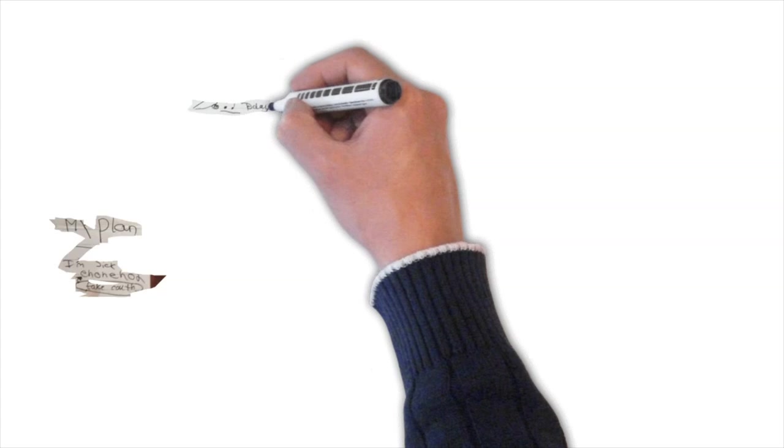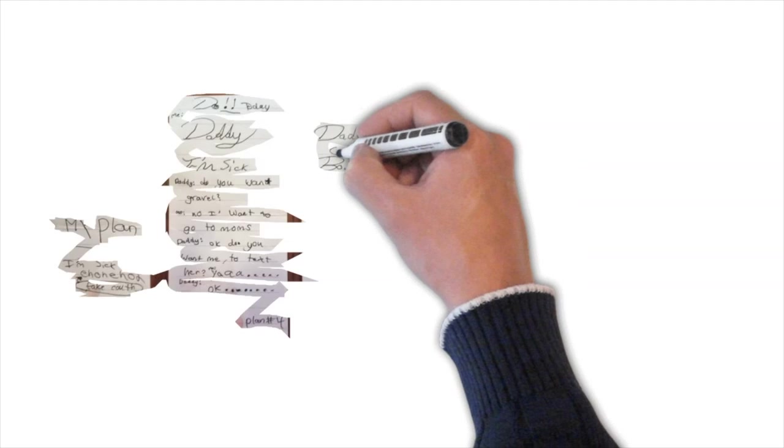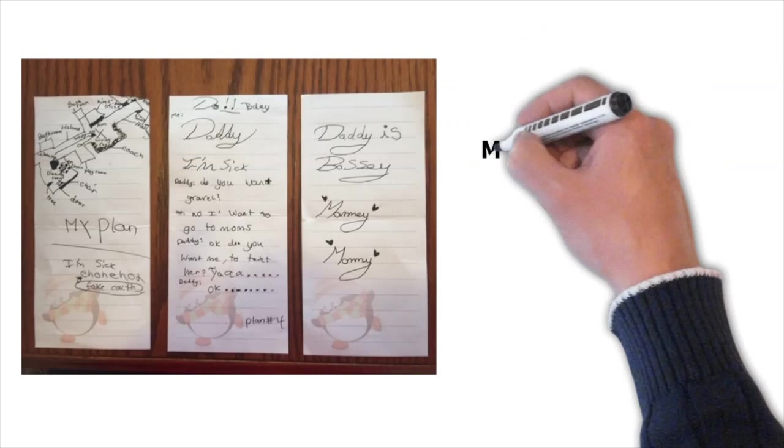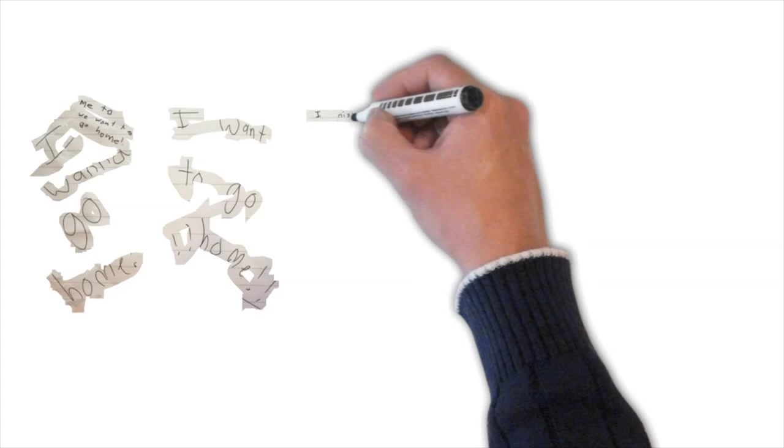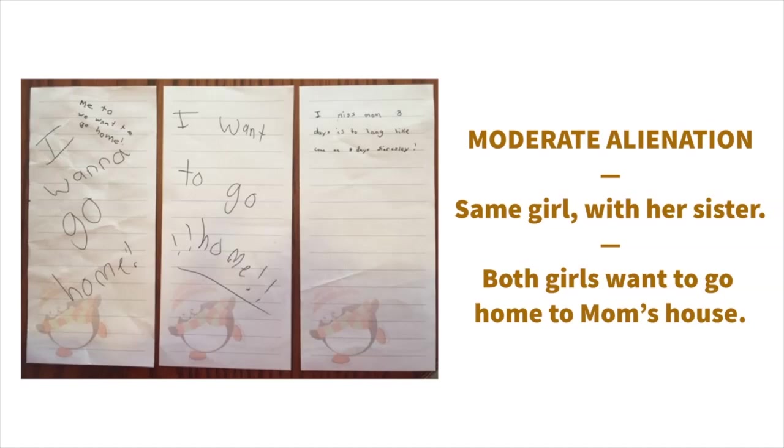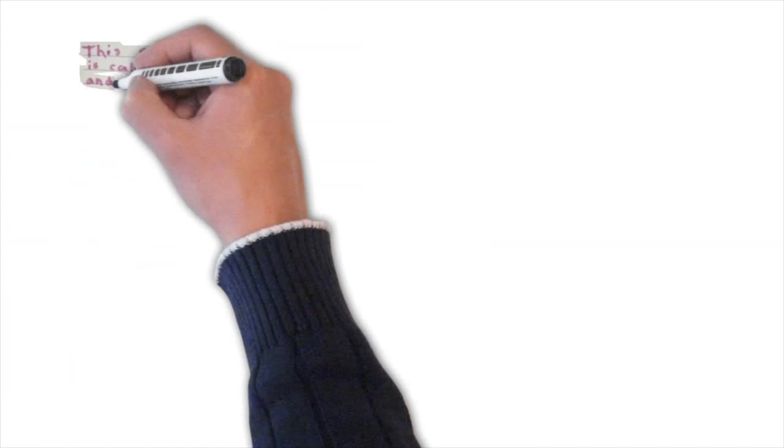The same girl making a scheme to fake illness in order to return to her mom's house. She writes out the plan. I'm sick. Dad asks, do you want gravel? No. I want to go home to mom's. Daddy is bossy. Love mommy. Love mommy. Same girl with her sister. Both girls want to go to mom's house. I want to go home. Me too. I want to go home. Eight days is too long.